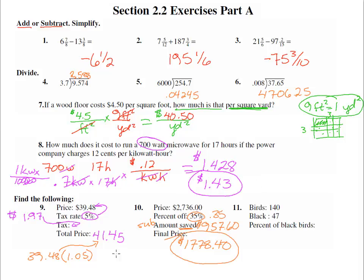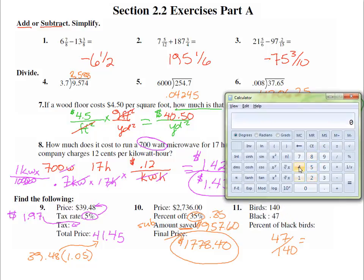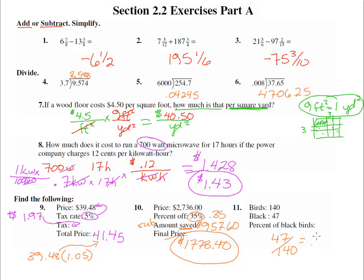Number 11: Birds, 140. The black birds are 47. So we have 47 out of 140, and we need to change this to a percent. We get to use our calculator again: 47 divided by 140, and that equals 0.3357. And we can round down to the seven because there's a one after it.